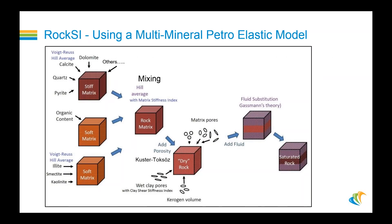To accomplish that, we need to use some type of rock physics model, as illustrated here. We have three different types of matrix: our stiff matrix, our organic content or kerogen in the softer matrix, and our clays in another group. After mixing those together, we add inclusions through Kuster-Toksöz for each group of minerals — stiff matrix, soft matrix from kerogen, and soft matrix from clays — then add fluid through fluid substitution for the saturated rock.